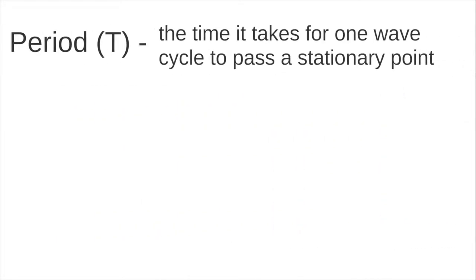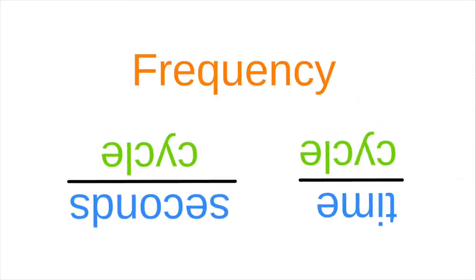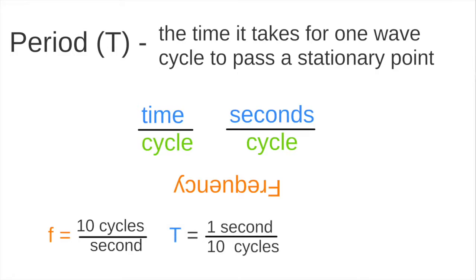One more definition is the period of the wave. The period is the time it takes for one wavelength to pass a given point. So the period is time per cycle, typically seconds per cycle. This is the inverse of frequency, as frequency is cycles per time. So the period can be determined from the frequency, and vice versa, by simply flipping the ratio. A frequency of 10 cycles per second has a period of 1 second per 10 cycles, or 0.1 seconds per cycle. More commonly, we simply say that the period is 0.1 seconds, because it is understood that the period is the time for one cycle.